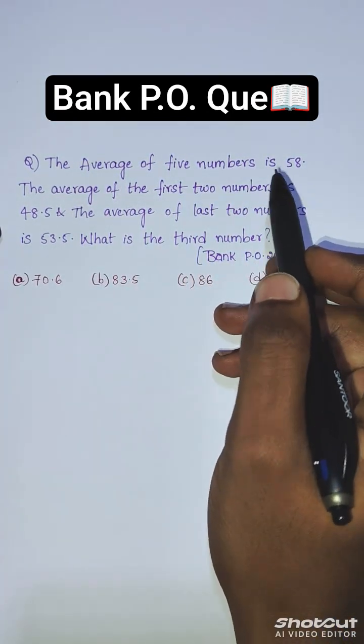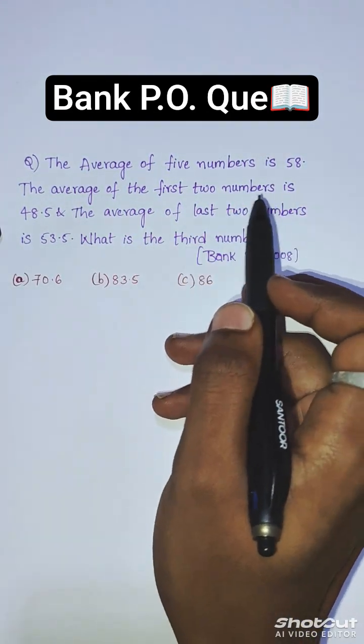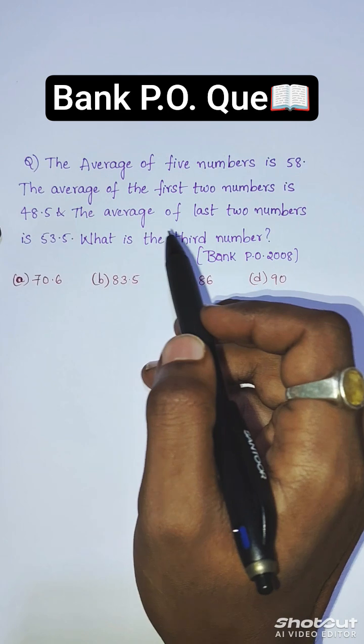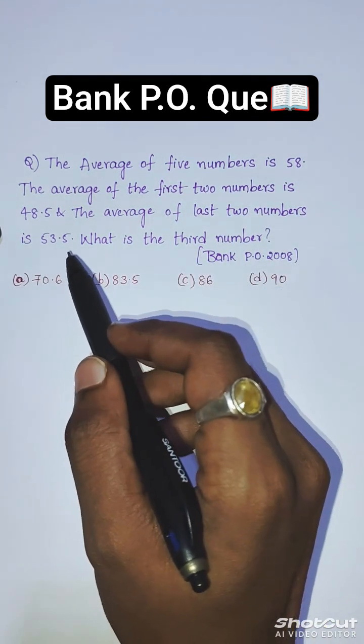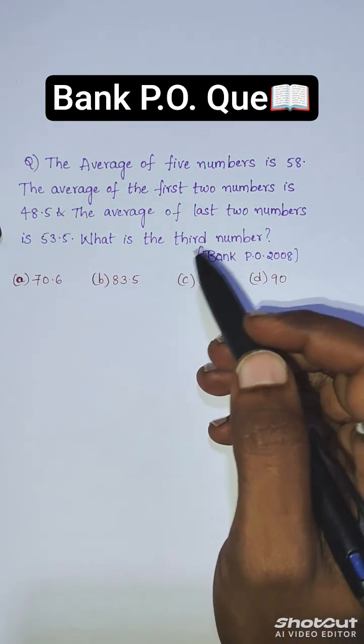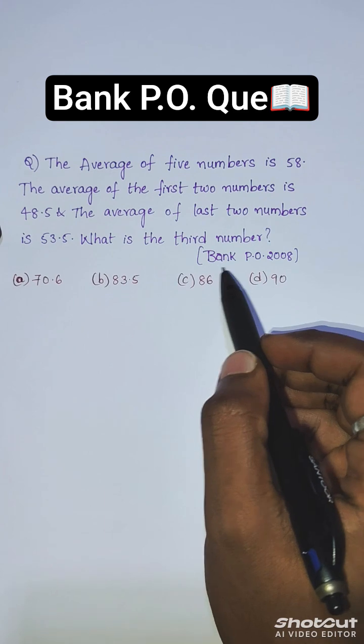The average of 5 numbers is 58. The average of the first two numbers is 48.5, and the average of the last two numbers is 53.5. What is the third number? Let's solve this question. This is a previous year bank question.